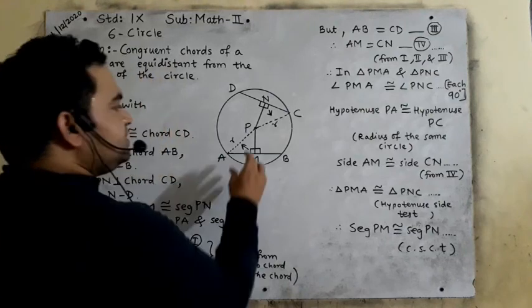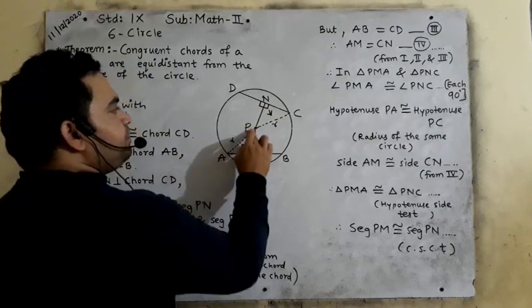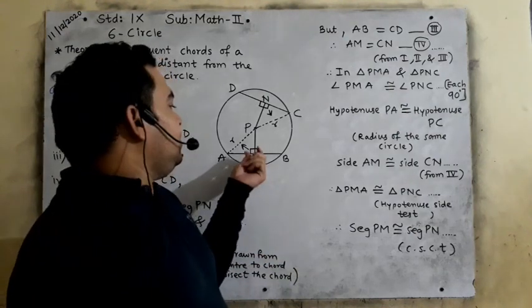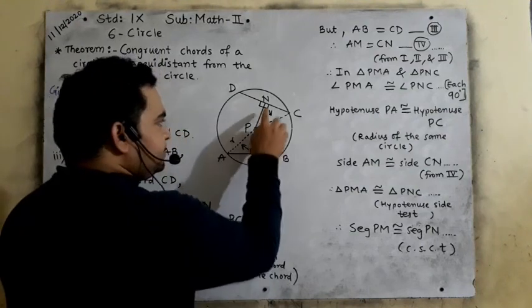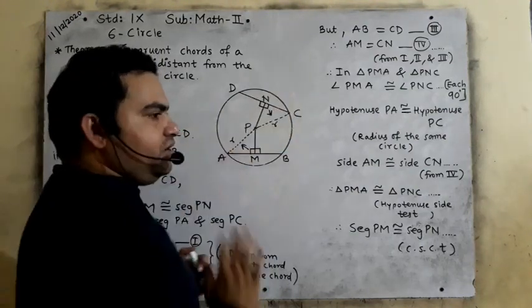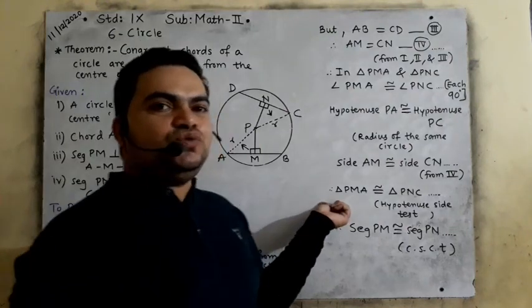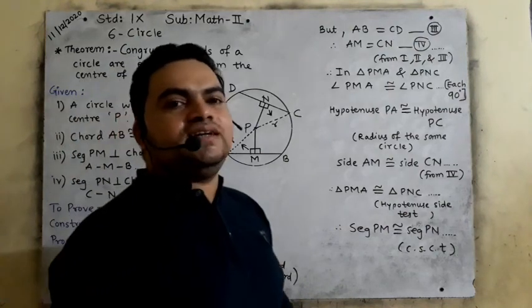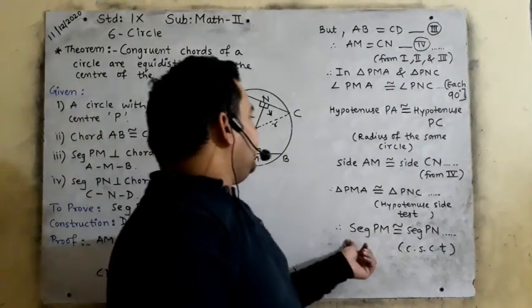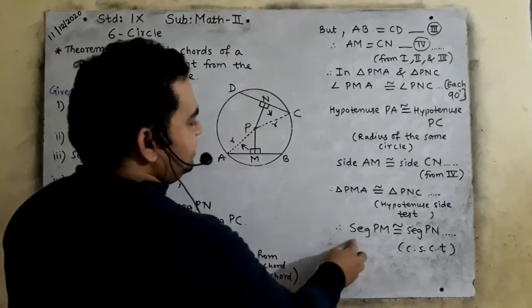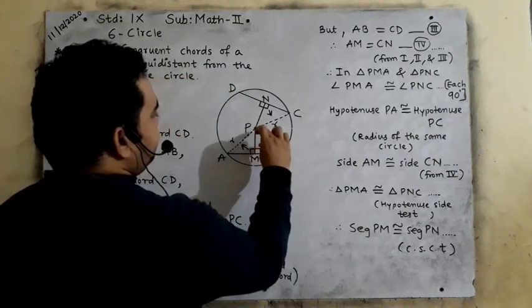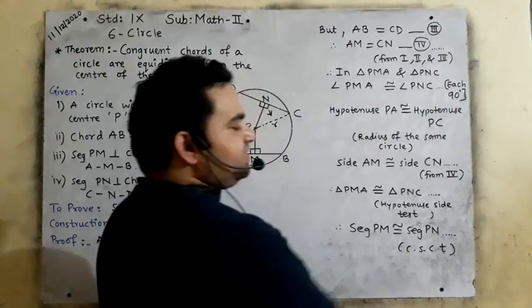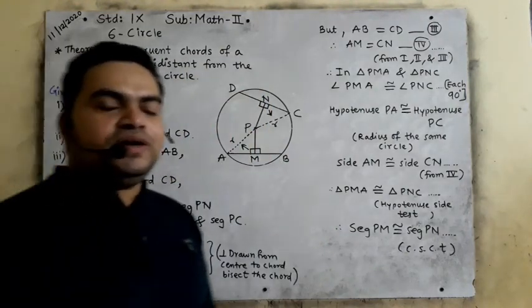Therefore triangle PMA and triangle PNC are congruent to each other. By which test? That is the hypotenuse-side test — because the hypotenuses are congruent and the sides are also congruent. Therefore segment PM is congruent to segment PN, because corresponding sides of congruent triangles are congruent to each other.